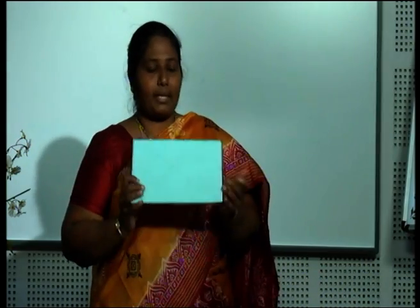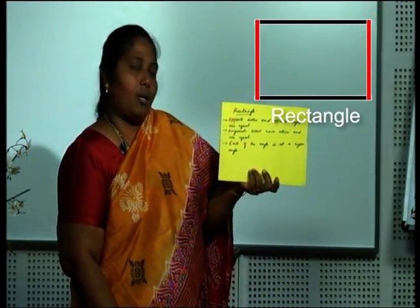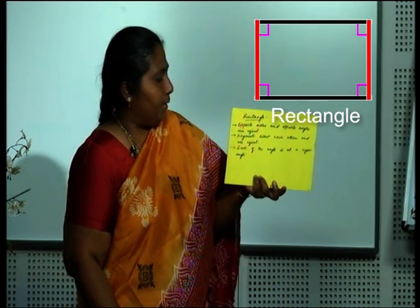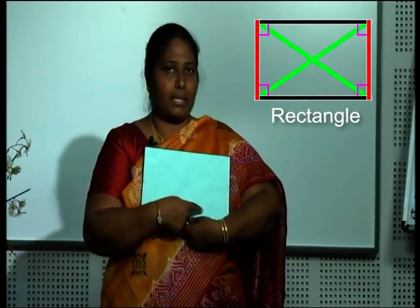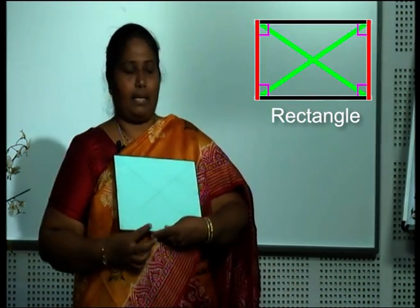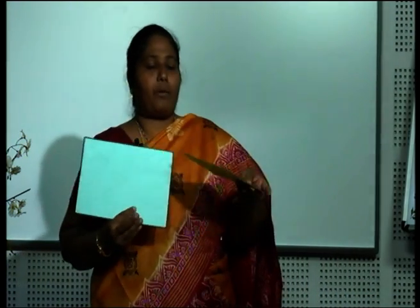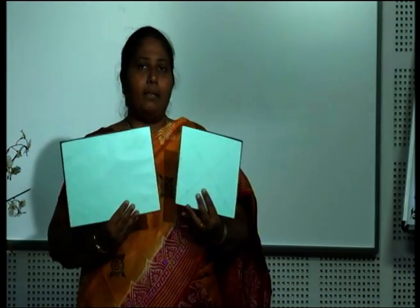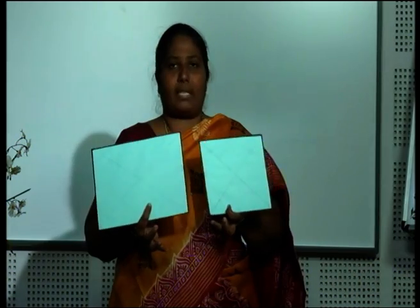Coming to a rectangle: in a rectangle, opposite sides and opposite angles are equal, diagonals bisect each other, and each of the angles is at a right angle. Now, do both of them satisfy what we have defined for a quadrilateral? A quadrilateral is a simple, closed, four-sided figure.